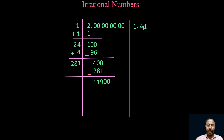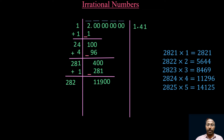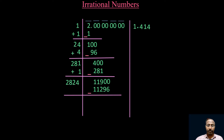We now have 11,900. Add 1 to 281: 281 + 1 = 282. We check: 2821×1=2821, 2822×2=5644, 2824×4=11,296, and 2825×5=14,125 which is greater than 11,900. So we take 2824×4=11,296. We take the same number on the left side and right side. Subtract to get the remainder.